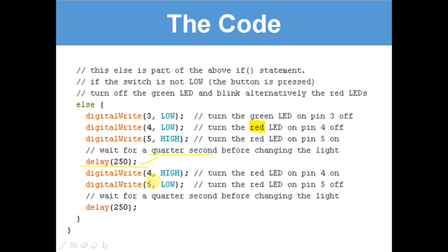digitalWrite 4 HIGH - this turns on the yellow LED on pin 4. So when the button's not pressed, it goes green. Then when it's pressed, it goes red first. Then here it turns the yellow LED on. So it turns red off and the yellow on. Then it waits a quarter of a second and then it'll go back to green because that's what happens when the button isn't pressed.